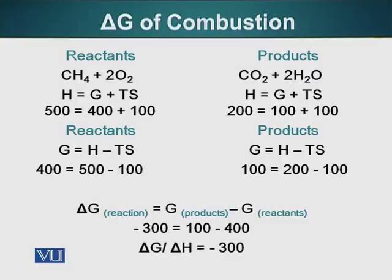The total energy of the system has gone down 300 units — from 500 down to 200. The usable energy G has gone down from 400 to 100. Since the total number of molecules is the same — we started with three molecules and ended with three molecules — we have not produced disorder. So total energy of the system is 200. The 300 units were released, because carbon-hydrogen bonds are high energy bonds, and the system is going from a higher energy state to a lower energy state.